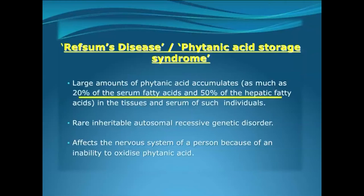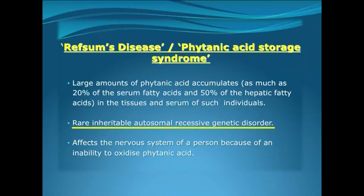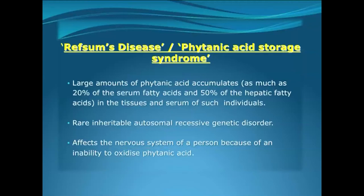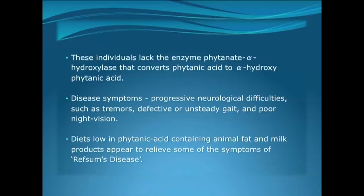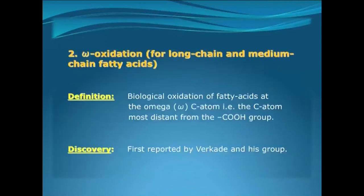Phytanic acid accumulates to about 20% of the serum fatty acids and about 50% of the hepatic fatty acids in total. It is an inheritable autosomal recessive disorder, and due to the accumulation of phytanic acid in our nervous system there is a progressive neurological deterioration followed by tremors, defective or unsteady gait, and poor night vision.